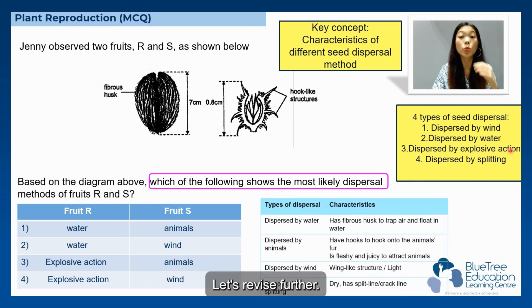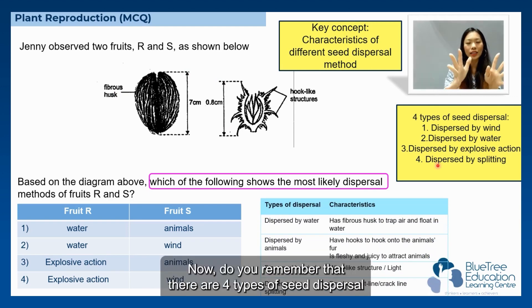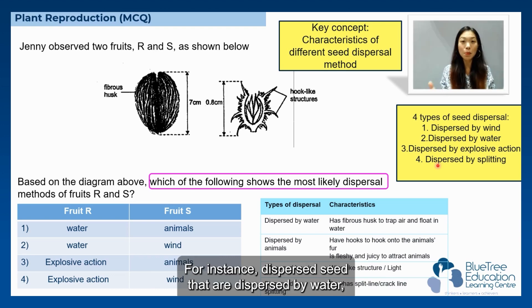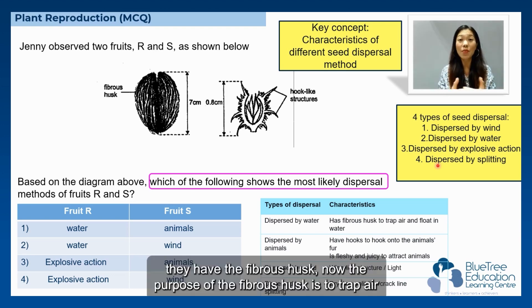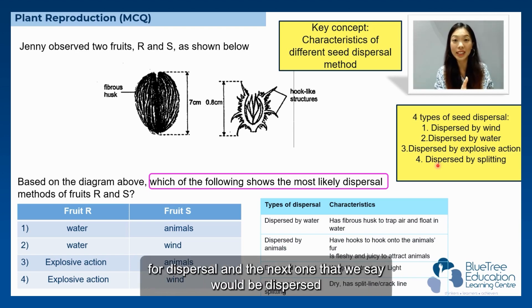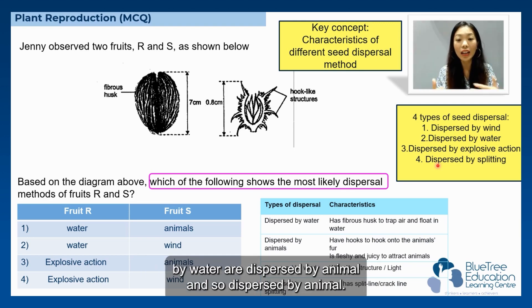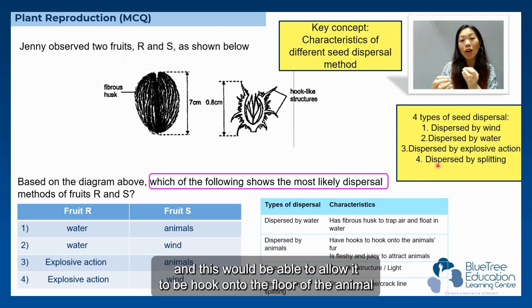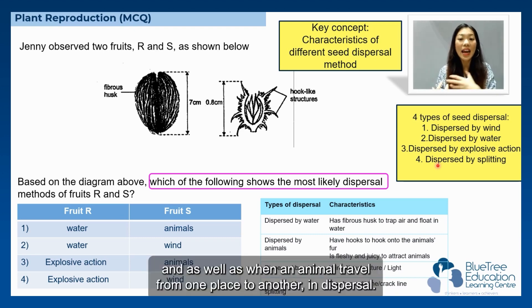Let's revise further. Each type of seed dispersal has unique characteristics. Seeds dispersed by water have a fibrous husk — the purpose of which is to trap air so that the seed floats across water for dispersal. For dispersal by animal, there are two characteristics: the seeds either have hooks that latch onto the fur of an animal, and as the animal travels from one place to another, this helps in dispersal.